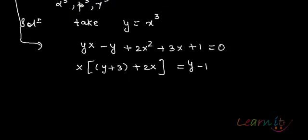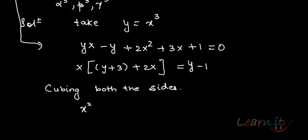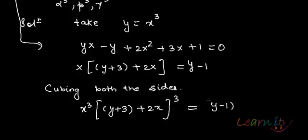Cubing both the sides, we get x^3 multiplied by (y + 3 + 2x) whole cube equals to (y - 1) whole cube.